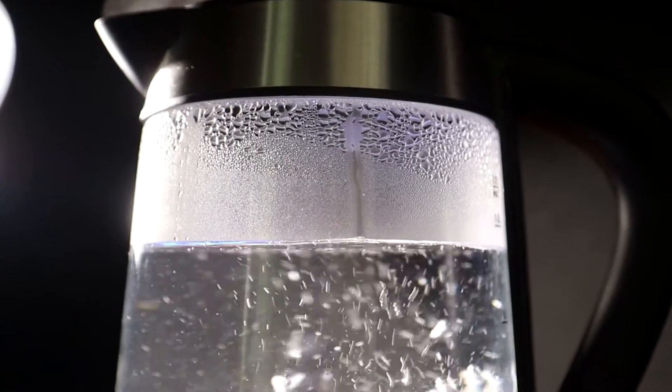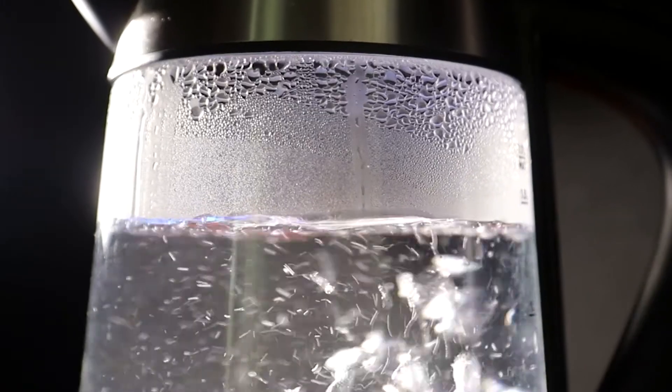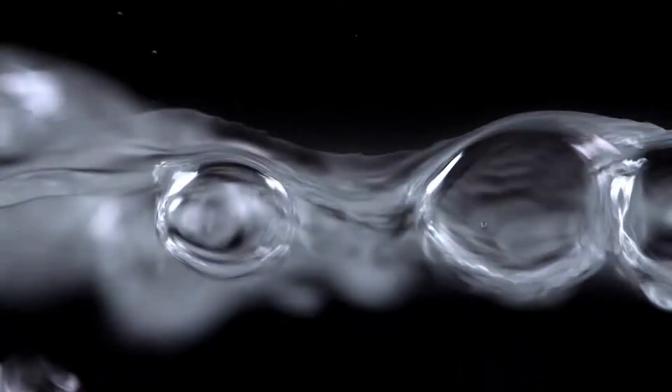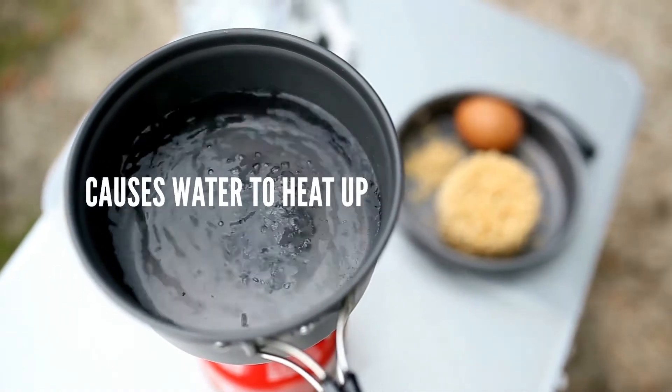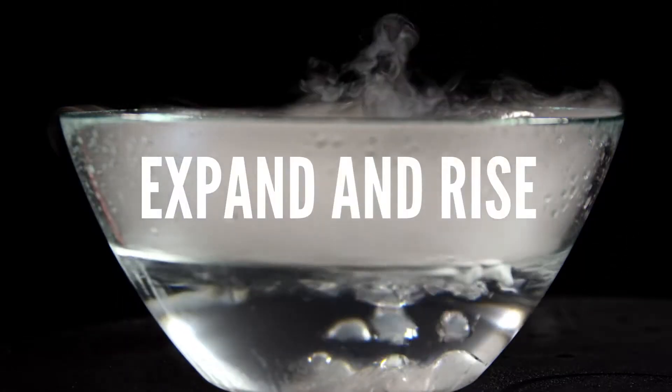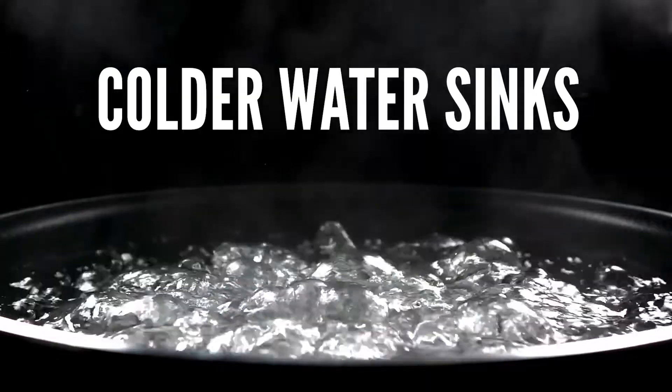Convection, on the other hand, relies on the movement of fluids, such as the way heat circulates through boiling water. The heat from the stove causes water to heat up, expand, and rise, while the colder water sinks, creating a circular flow of energy.